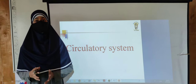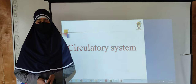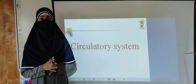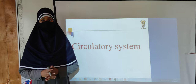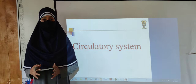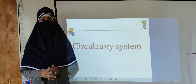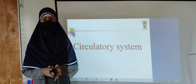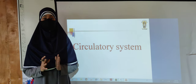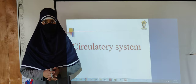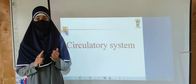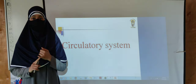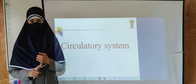What is a circulatory system? The system that circulates or supplies the blood to our whole body is called the circulatory system. Humans have a well-developed and efficient circulatory system. It consists of blood vessels and a thick muscular organ called the heart.